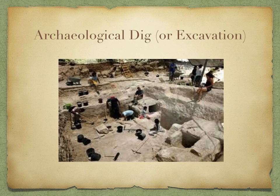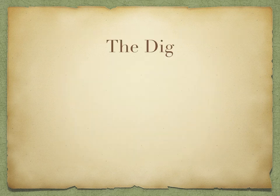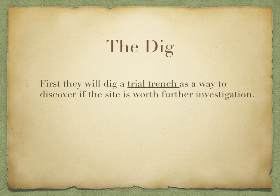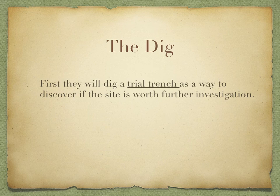We're going to look at how an excavation site is set up — the process by which an archaeologist will scientifically excavate the site. The first thing they will do is dig a trial trench as a way to discover if the site is worth further investigation. If they feel there is a very low probability of there being any historically significant artifacts, they will abandon the dig.